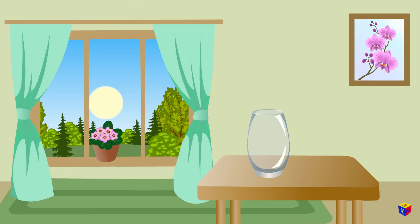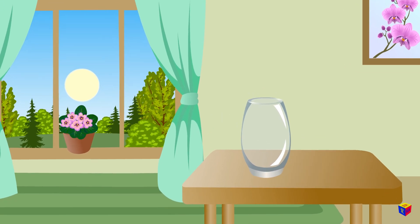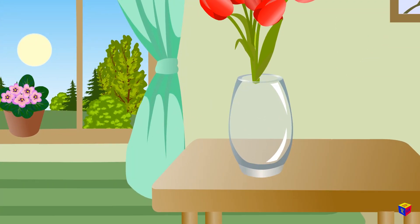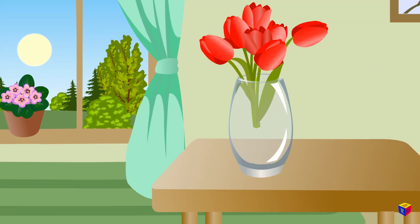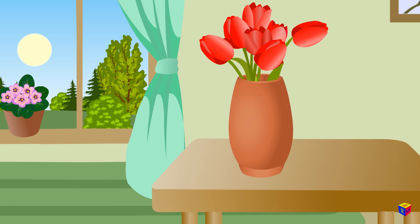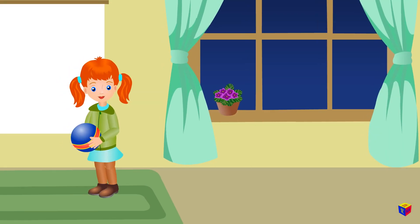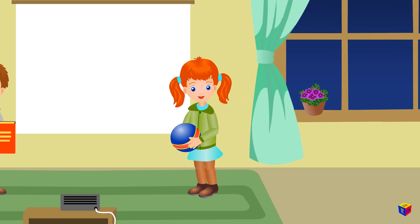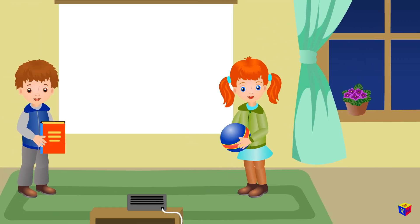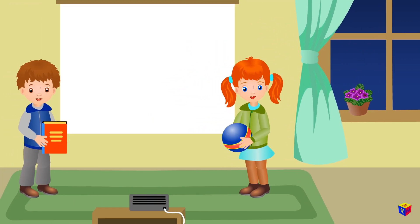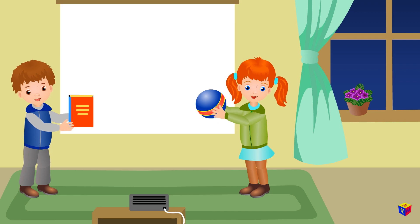Some objects allow light to easily travel through them. These objects are called transparent, and we can see through them. Opaque objects block light from traveling through them. Rays of light always travel in straight lines. See what happens if light hits an opaque object in its path.